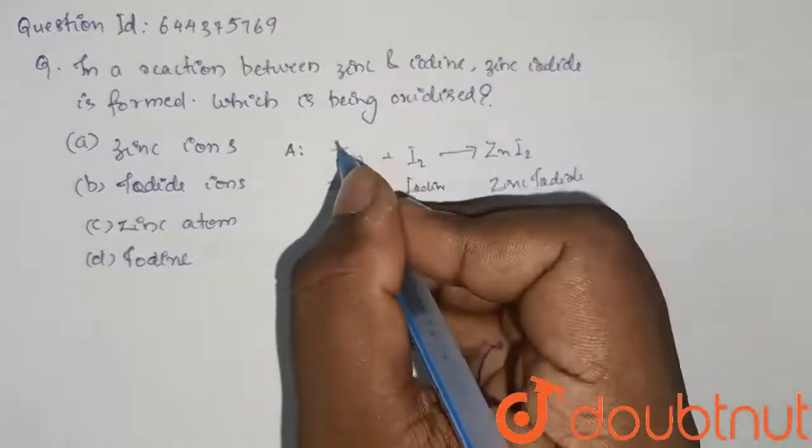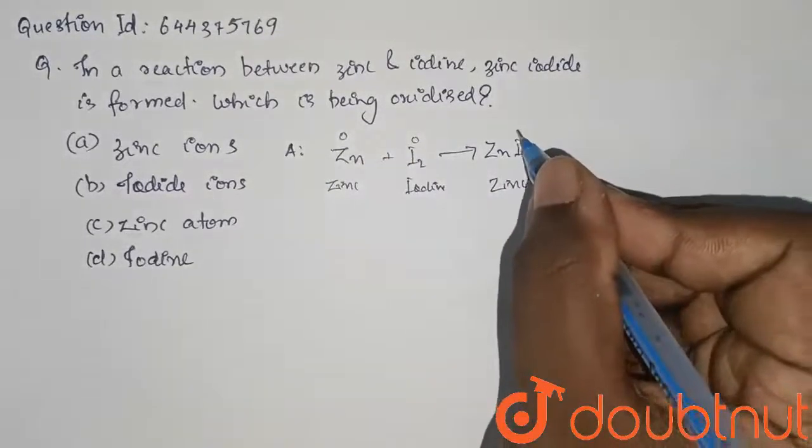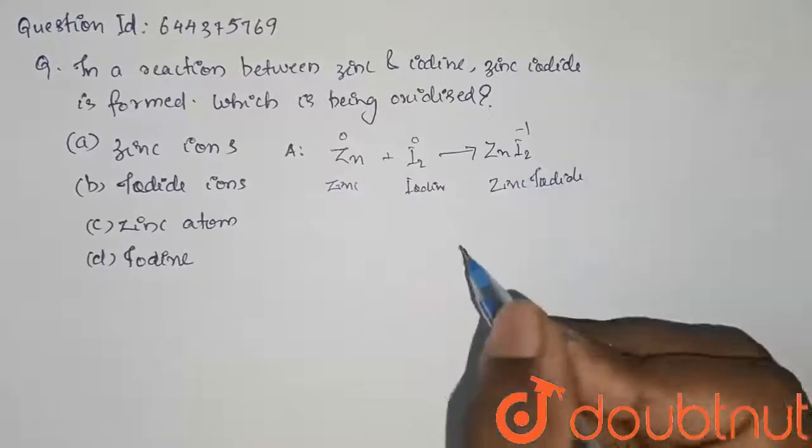So here, the oxidation number is 0, 0 and here it is minus 1. So from this, we have to calculate the oxidation number of zinc.